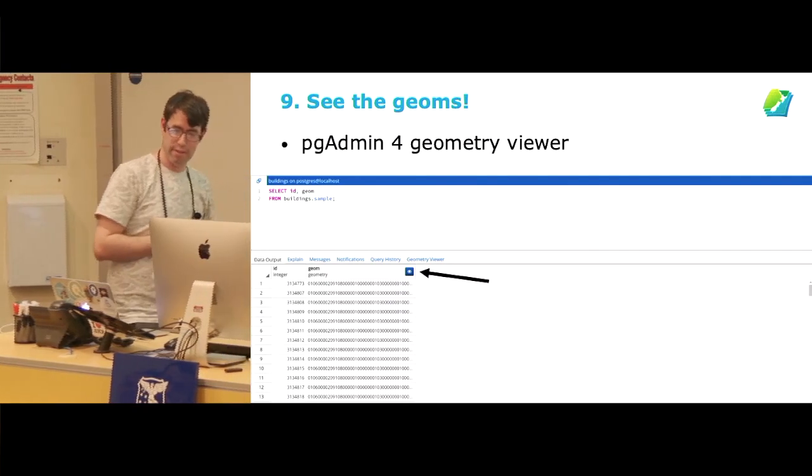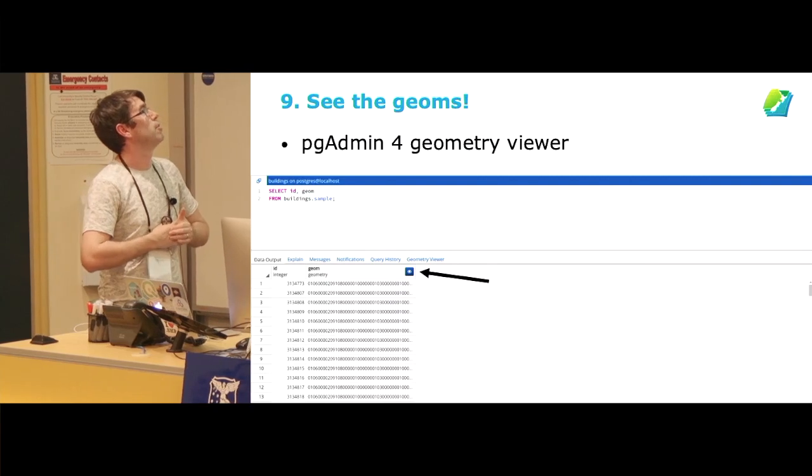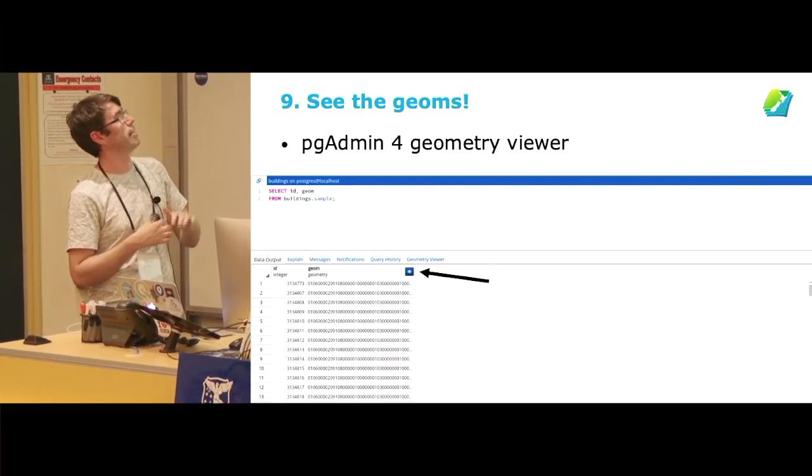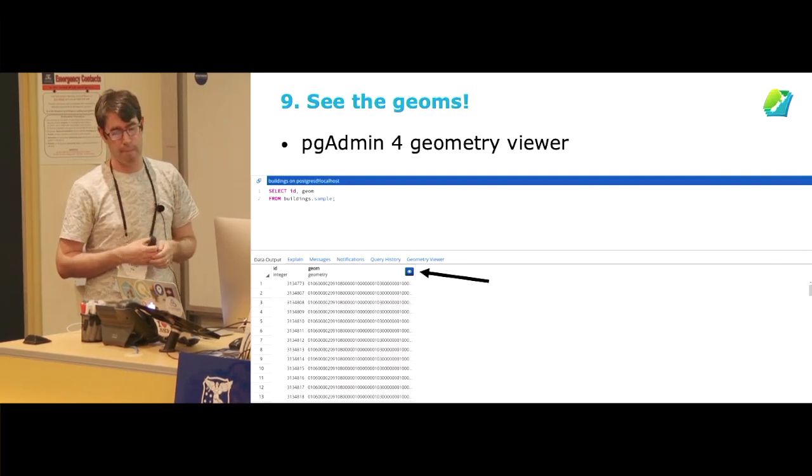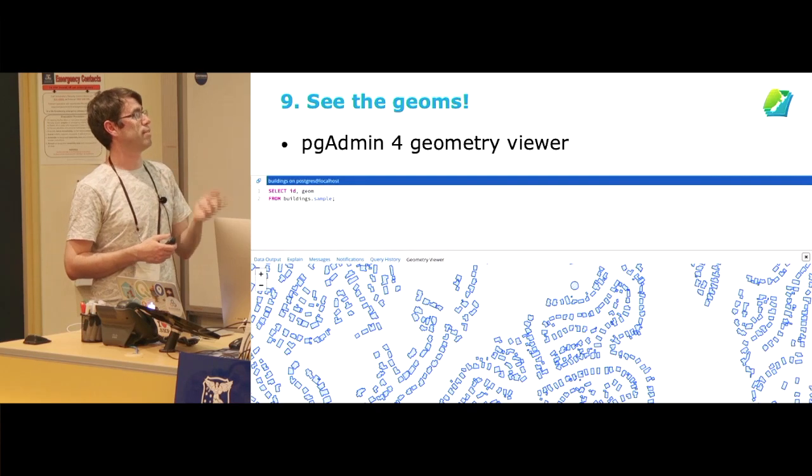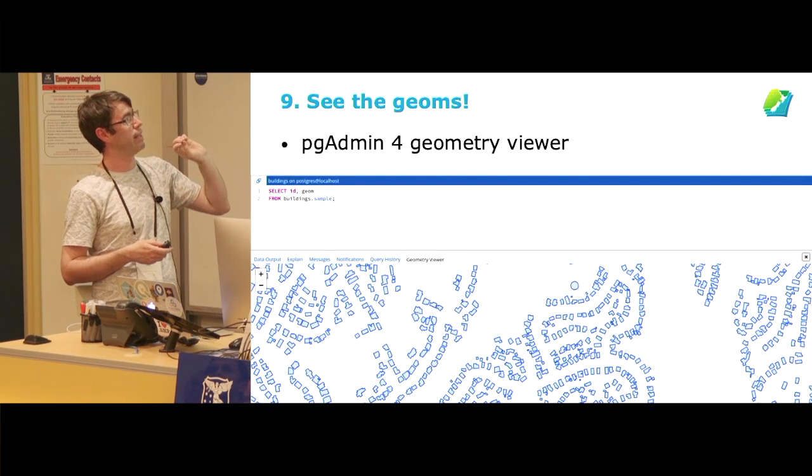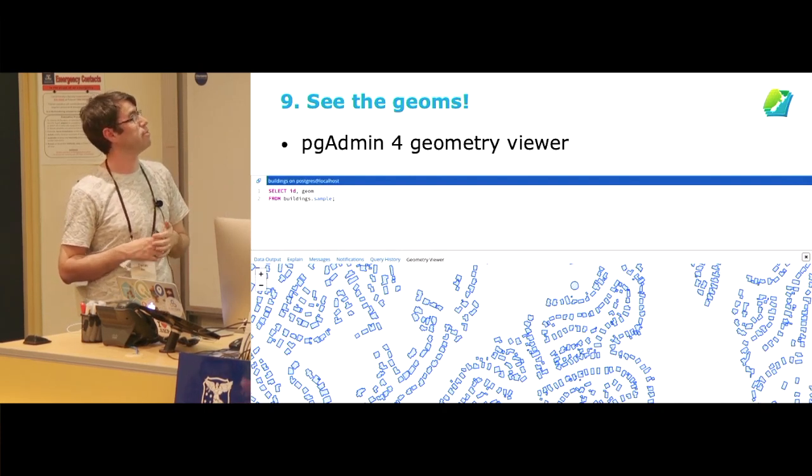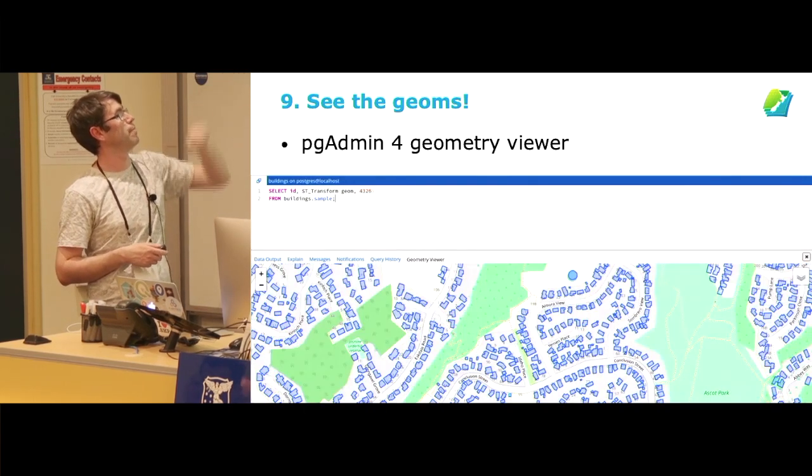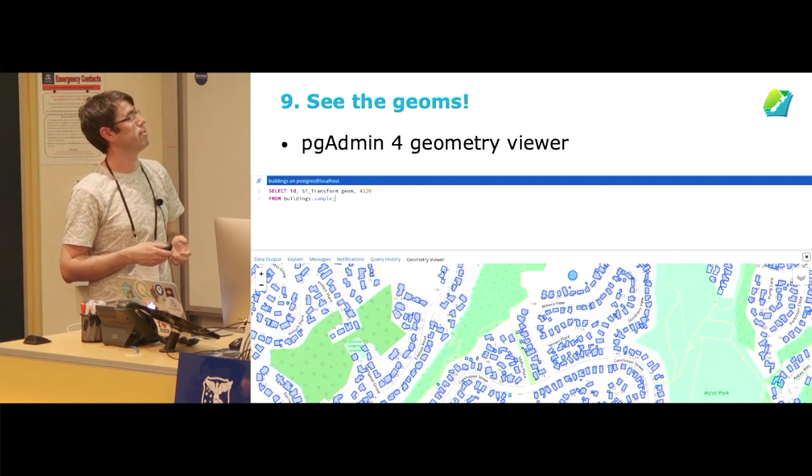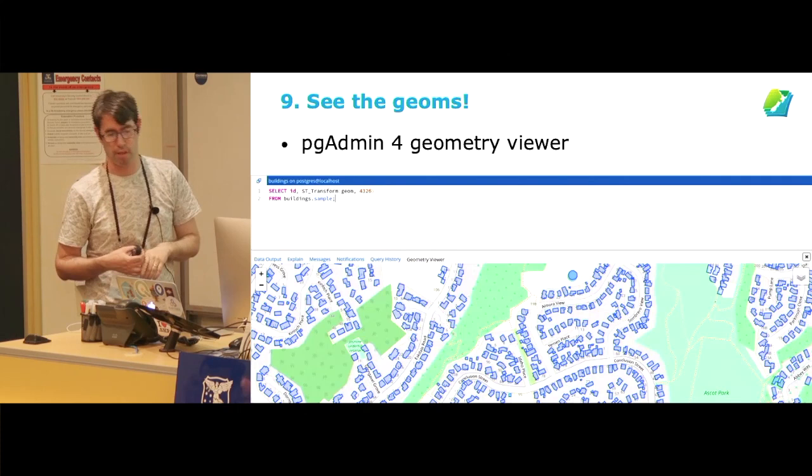The ninth thing I've learned is that recently PGAdmin 4 got a geometry viewer. In PGAdmin 4, you can now select ID and Geom and if you have a geometry column, you'll get this little blue eye icon. And if you click on that, you can actually see your geometries within PGAdmin. If they are in a coordinate system that's not 4326, then you just get a blank background. But if you transform the selection to 4326, WGS84, then you get some OpenStreetMap contextual information in the background.